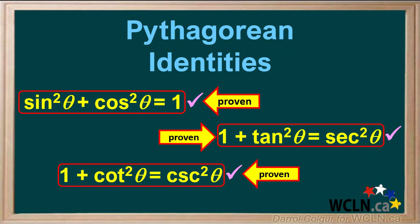Now we've proven all three Pythagorean trig identities, so we can use these to help verify other second-degree trig identities.